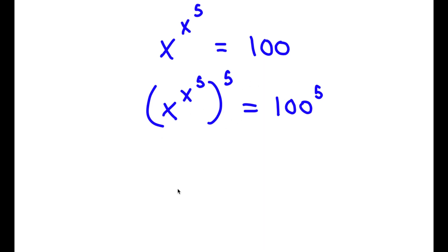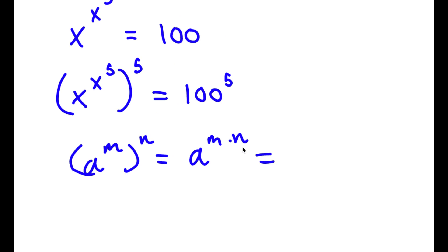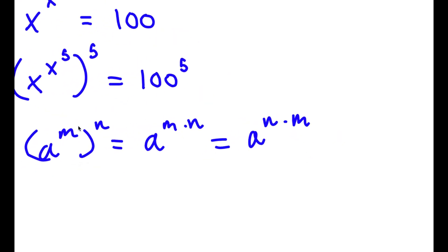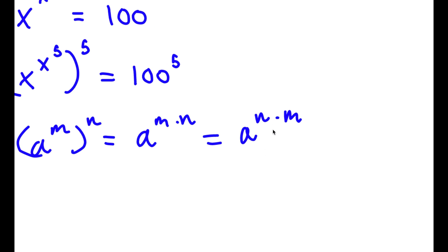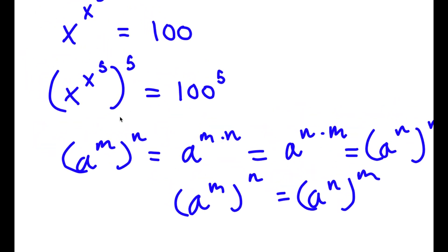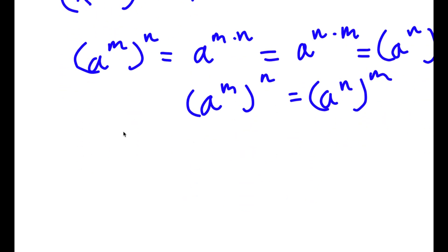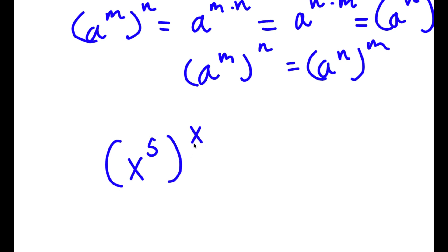Now if I have something in the form a to the power of m to the power of n, this is the same thing as a to the power of m times n. And m times n are interchangeable, so this is also equal to a to the power of n times m, which means we can write it as a to the power of n to the power of m. So a to the power of m to the power of n equals a to the power of n to the power of m. In this case I can think of x to the power of 5 as m and 5 as n, so if I switch these two places, I get x to the power of 5 to the power of x to the power of 5.